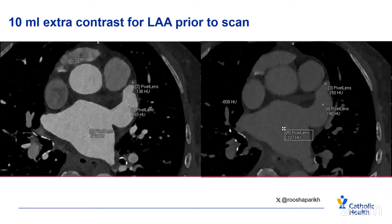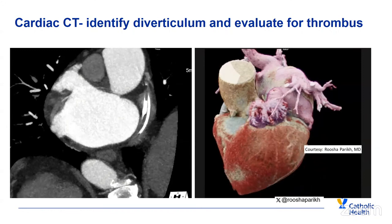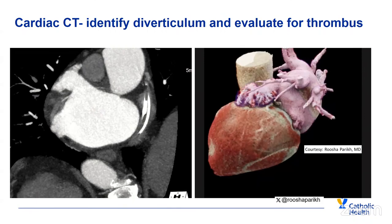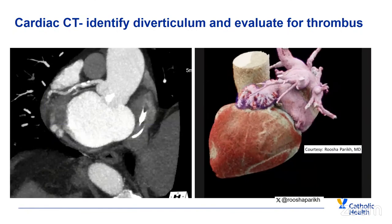Another protocol uses prone imaging to rule out thrombus, shared by Dr. Marcus Scherer from Atrium Health. In routine supine imaging, even at a five-minute delay, there's still an area at the tip of the appendage that cannot rule out thrombus. When the same protocol is repeated in the prone position, contrast gravitates towards the tip and appears brightest, with delayed clearing, confirming no thrombus. While reviewing the left atrium, you also want to identify diverticulum and evaluate for thrombus. Here we have a few extra diverticulums in addition to the left atrial appendage.